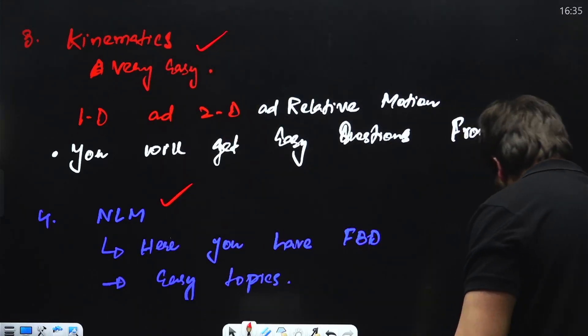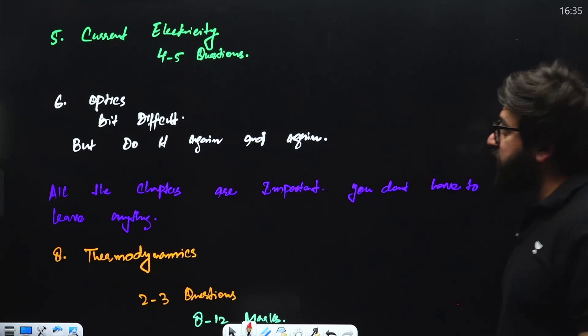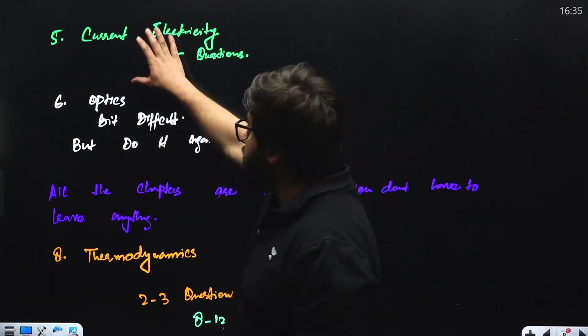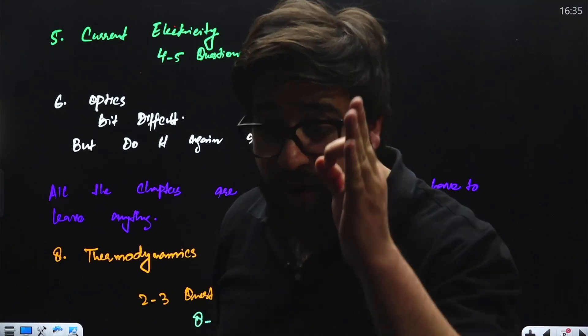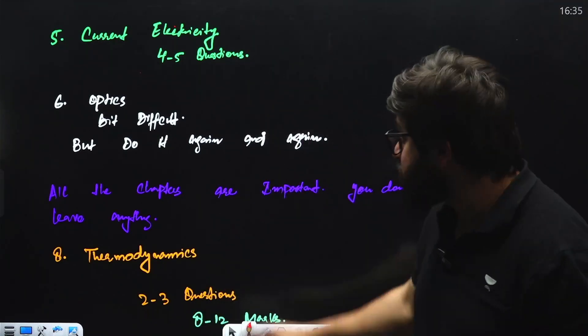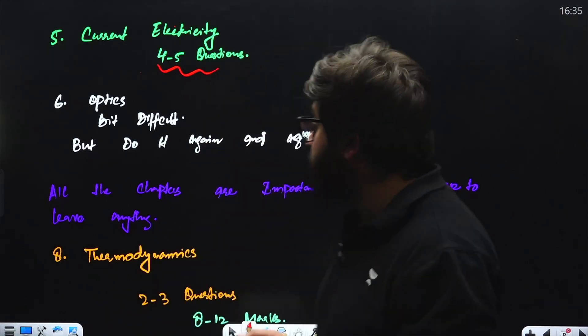Next, we have got the Current Electricity chapter. Current Electricity is considered to be among the high weightage chapters. You are not supposed to leave this at any cost. Four to five questions you can expect from this one, so five into four means 20 marks from this one also.